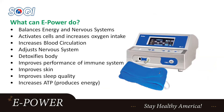Briefly, what can the ePower do? In a nutshell — it balances energy and the nervous system, activates cells and increases oxygen intake, increases blood circulation, adjusts the nervous system, detoxifies the body, improves performance of the immune system, improves skin, improves sleep quality, and increases ATP. ATP is very important — it's pretty much like the ignition that triggers cellular activities. It's very important that the ATP level is normal and active. A lot of people tell me that after using the machine, they can sleep much better.